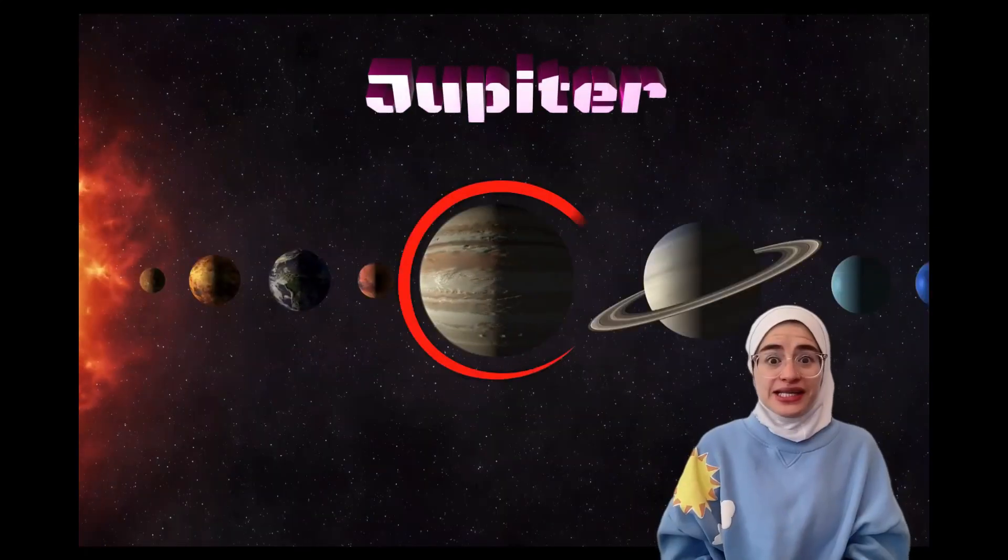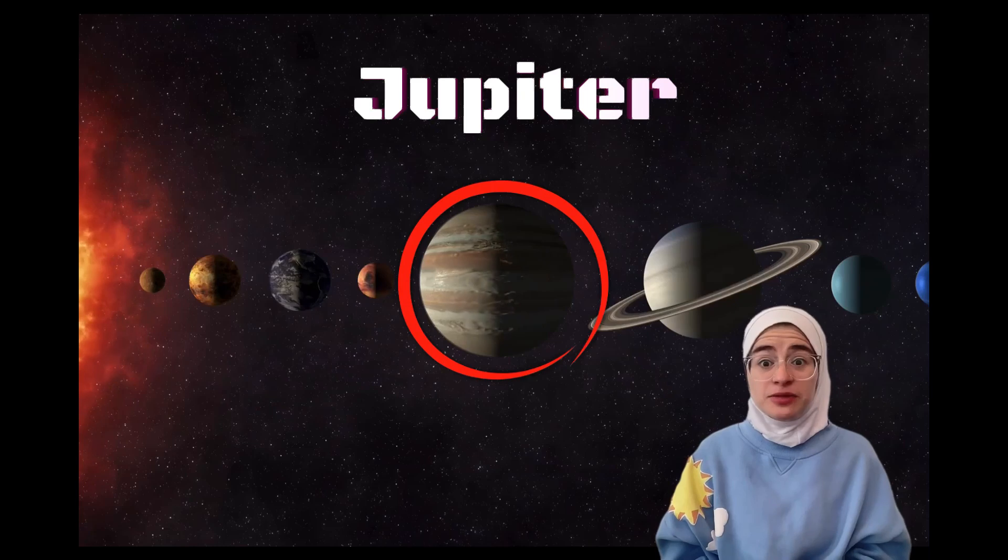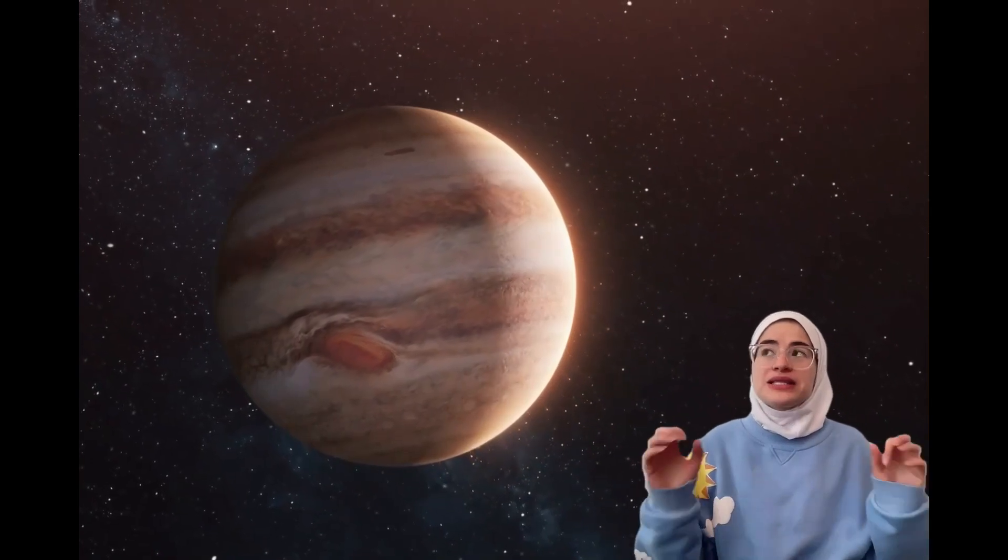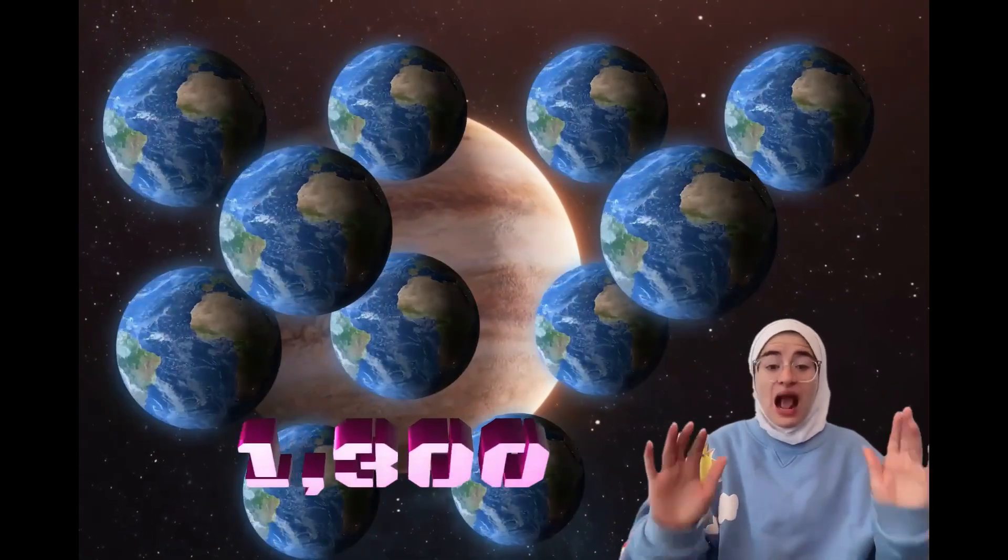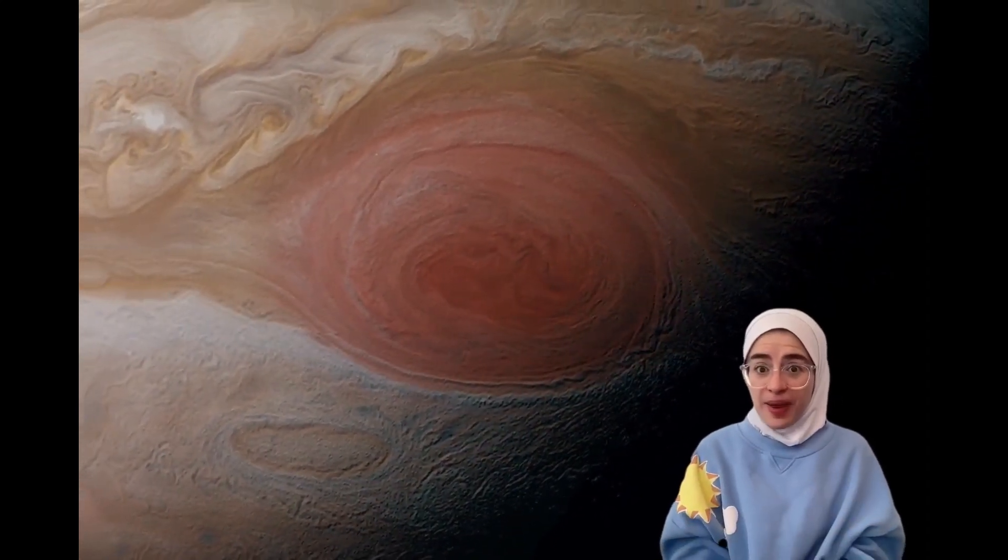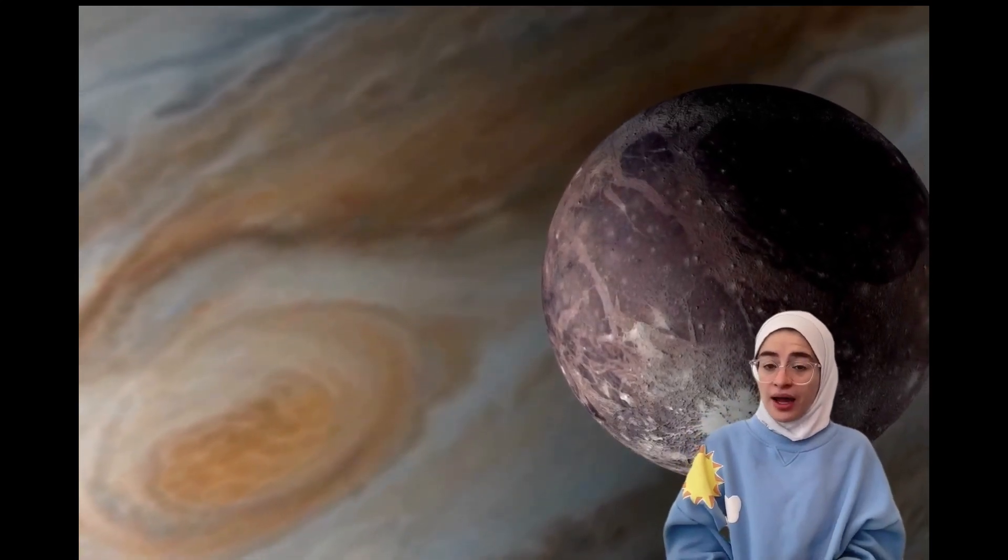Jupiter is the fifth planet from the sun. It is the biggest planet in our solar system. Jupiter is like a giant ball of gas, with a spectacular striped pattern of clouds. It's so massive that it could fit more than 1,300 Earths inside of it. Jupiter has a powerful storm known as the Great Red Spot, a massive swirling hurricane that's been raging for hundreds of years. Jupiter's moon Ganymede is the biggest moon in the solar system. This quick spin makes a day on Jupiter only about 10 hours long, while a day on Earth is 24 hours long.